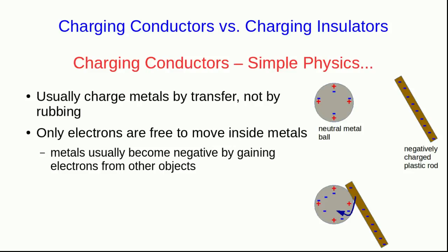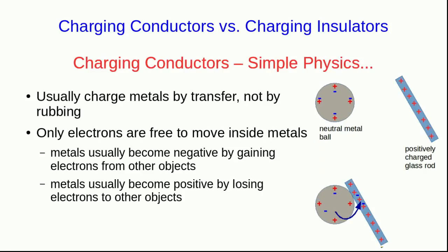So when we touch a negatively charged, say, plastic rod to a metal, what is usually going to happen is that electrons are transferred out of the negatively charged plastic rod and into the metal. And if we touch the metal with a positively charged rod, such as a glass rod that we've rubbed with silk, then what will usually happen is that electrons will be transferred out of the metal and onto the surface of the glass.